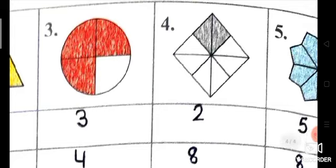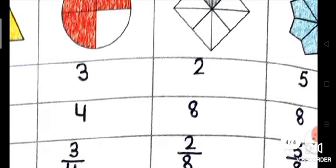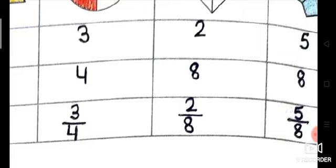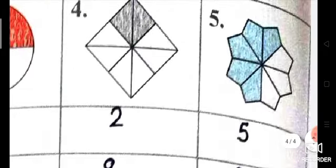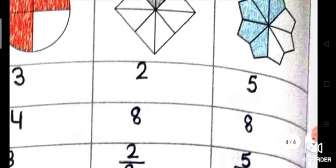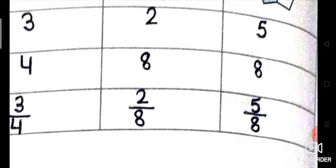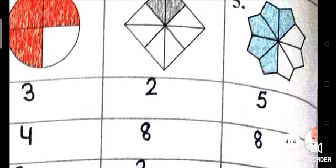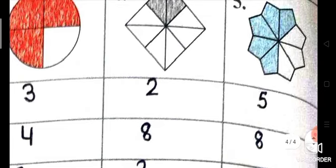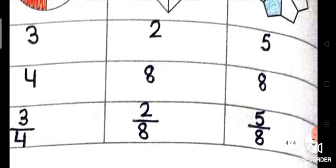Fourth figure: count all triangles — one, two, three, four, five, six, seven, eight — total are eight, but shaded are two, so numerator is two, denominator is eight, fraction is two upon eight. Fifth figure: total parts are one, two, three, four, five, six, seven, eight — total are eight. Out of eight, five parts are shaded, so numerator is five, denominator is eight, fraction is five upon eight.